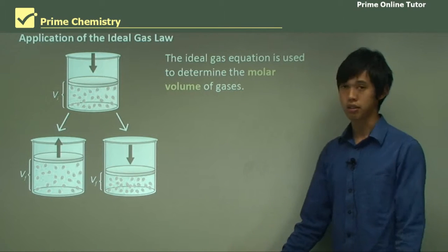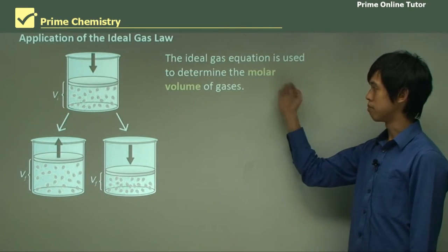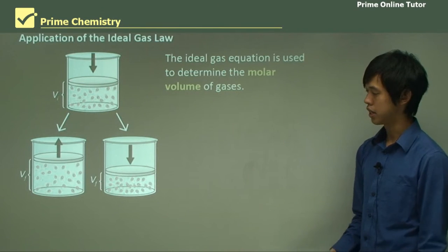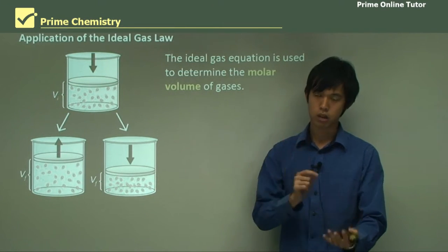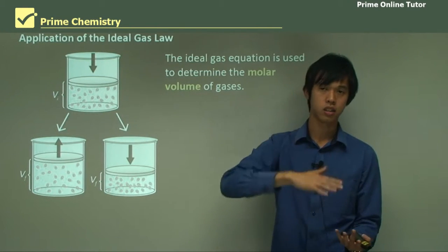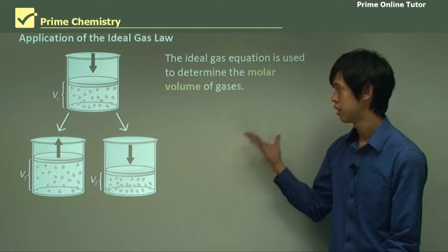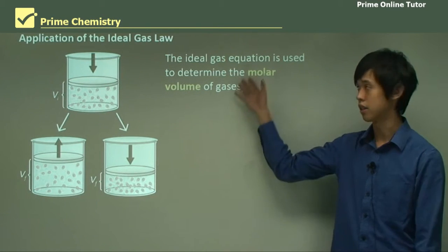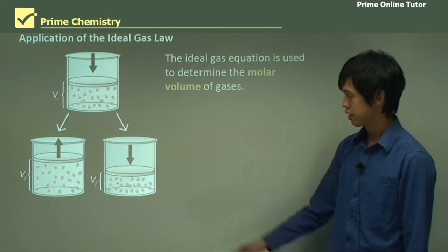So, how do we use the ideal gas law? Well, the ideal gas equation is used to determine the molar volume of gases. So you know when, in the back of your periodic table, where they say, one mole of ideal gas at these conditions gives you this much volume. This is where it comes from, the ideal gas law.